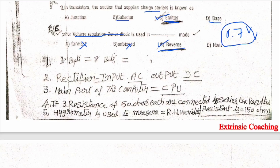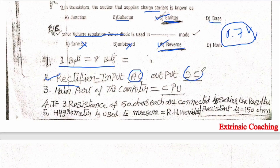Here some important points are written, as these are repeatedly asked: one byte equals eight bits; a rectifier converts AC to DC; an inverter converts DC to AC; the main part of a computer is the CPU (central processing unit). If three resistors of 50 ohms each are connected in series, the total resistance is 150 ohms.